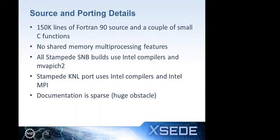A few details about the code itself: there are roughly 150,000 lines of Fortran 90 source, a couple of small C functions, and no shared memory multiprocessing — no threads-based functionality. All runs have been on Stampede Sandy Bridge nodes using Intel compilers and MvaPitch 2. I recently completed a KNL port, but the absence of shared memory multiprocessing features is an obstacle there. Documentation on CCAM is also quite sparse.